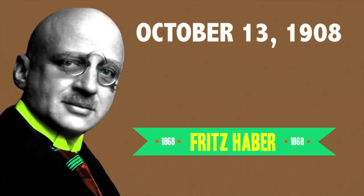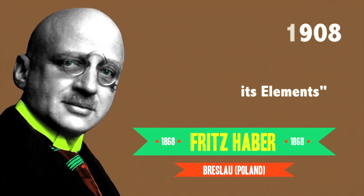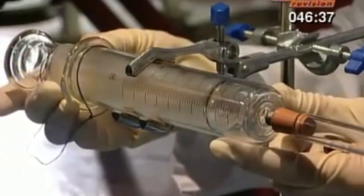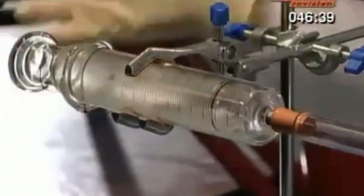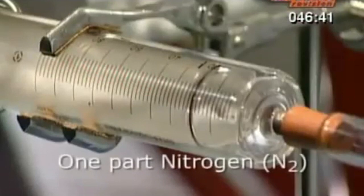On the 13th of October 1908, Fritz Haber filed his patent on the synthesis of ammonia from its elements. The subject tackles how ammonia, a chemically reactive and highly usable form of nitrogen, can be synthesized.